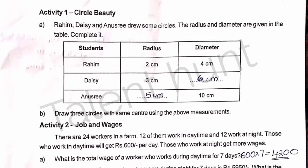Our next activity is Circle Beauty. The question involves Raheem, Daisy, and Anuistry, who drew some circles. The radius and diameter are given. We need to complete the table — the diameter of radius is like this. If the term is not complete, we are going to find the diameter from the radius.